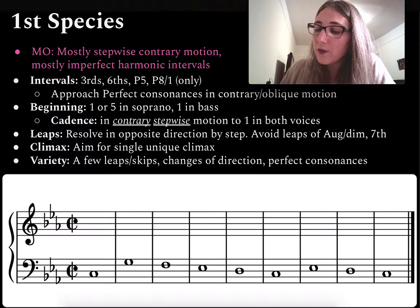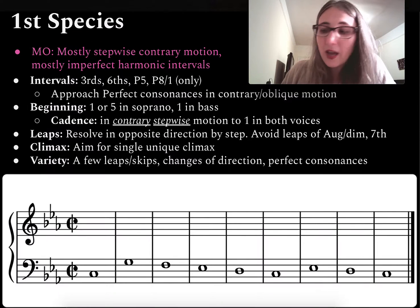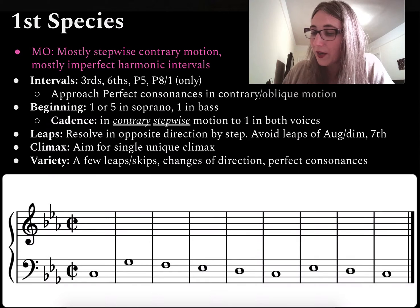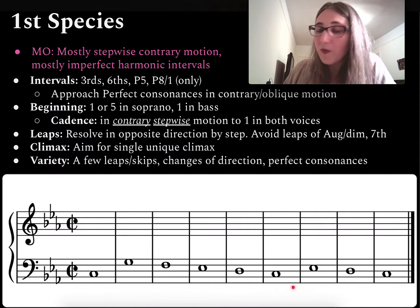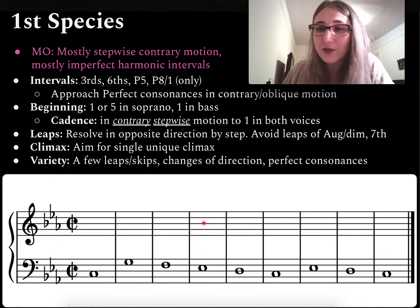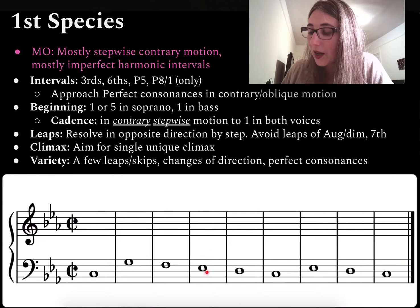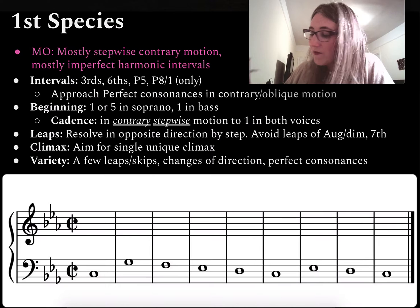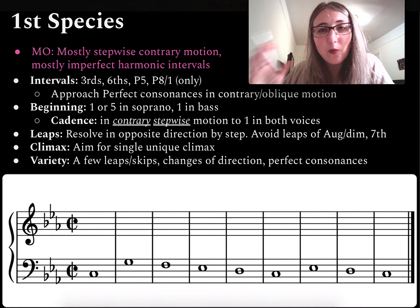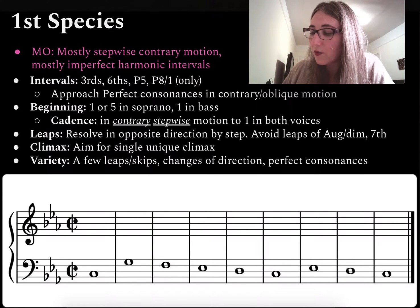So we're going to start by reviewing our primary MO for first species counterpoint to give us an overview, and then we'll drill into each of the details as they become relevant as we work through the example. If we're doing a first species example, that means we're writing a counterpoint that has one note against one note — it's a one-to-one counterpoint example. I've got a cantus firmus here, my given line. If my given line is in whole notes, I'm going to be writing one whole note against one whole note. That's the overall rhythm for the line.